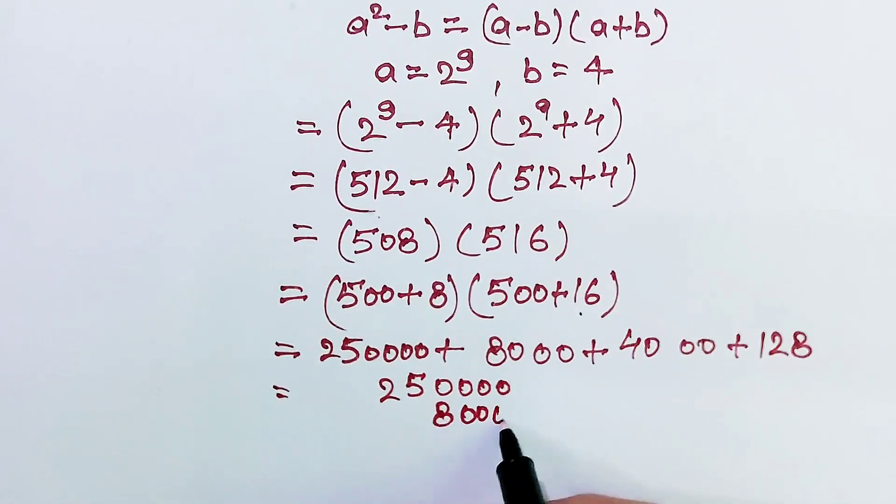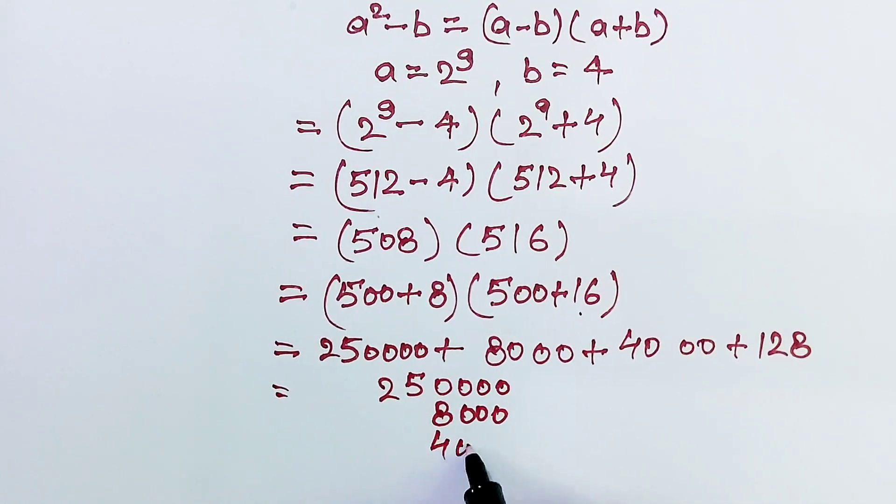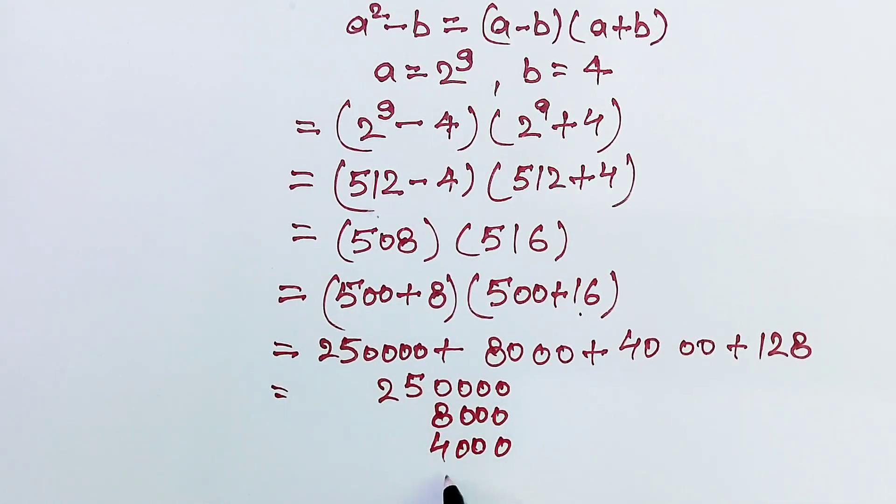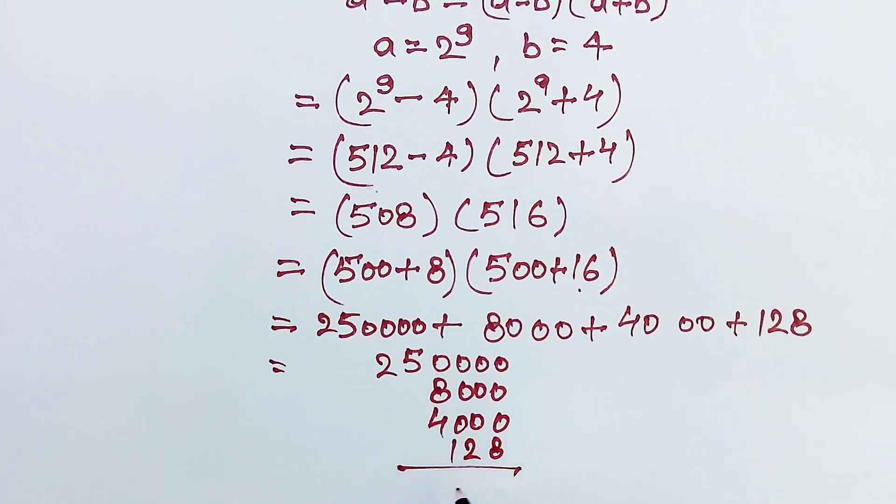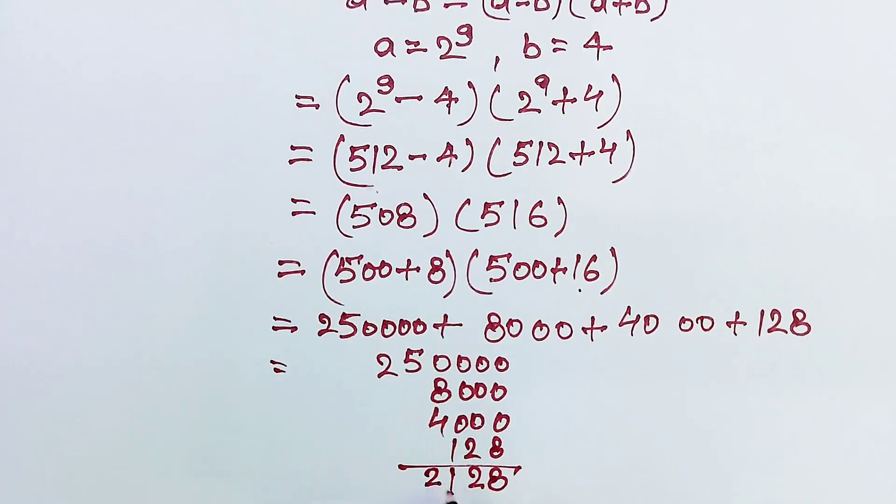3 times 0, 0, 3 times 0, 0, and 1 2 8 here. 8, 0, 8, 0, 12, 1 is a carry, 5 and 1, 6.